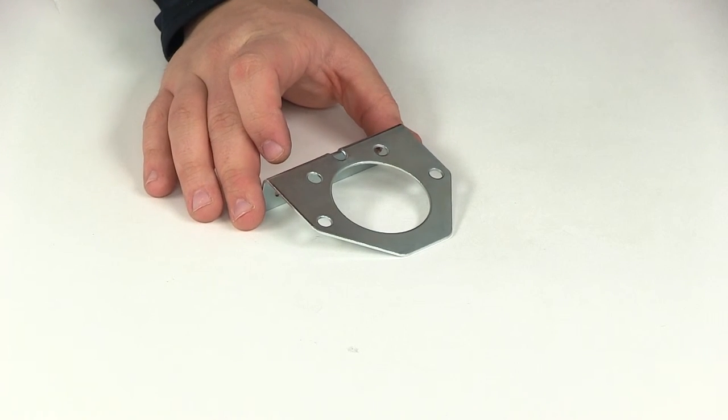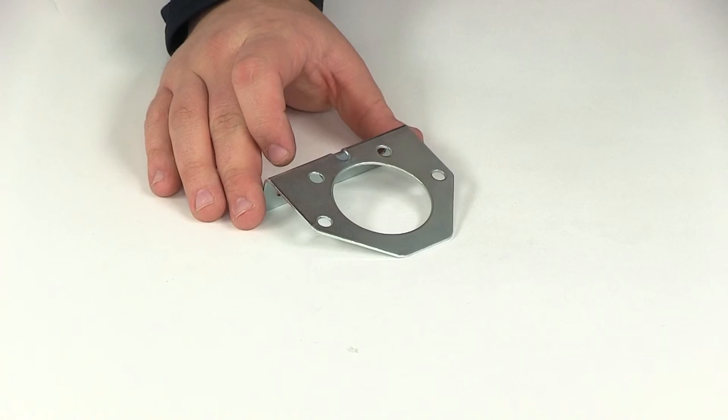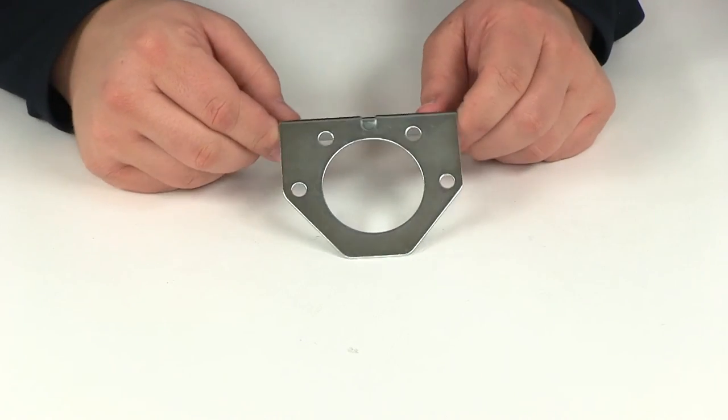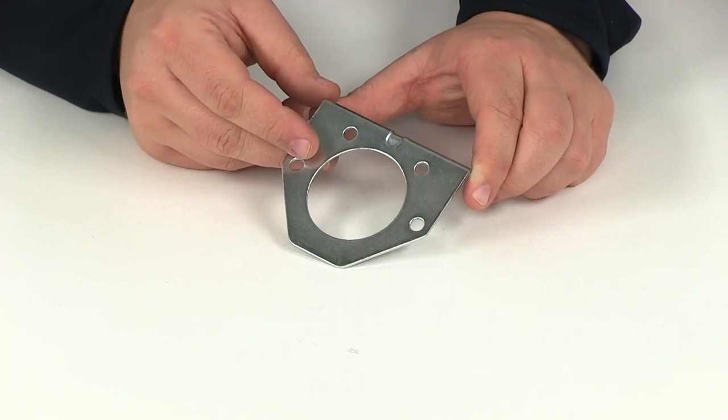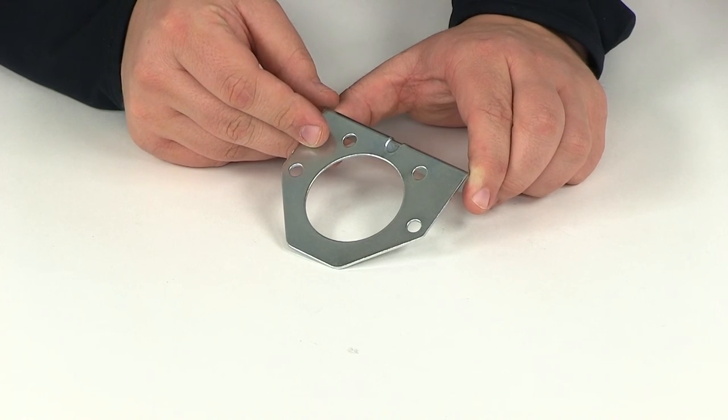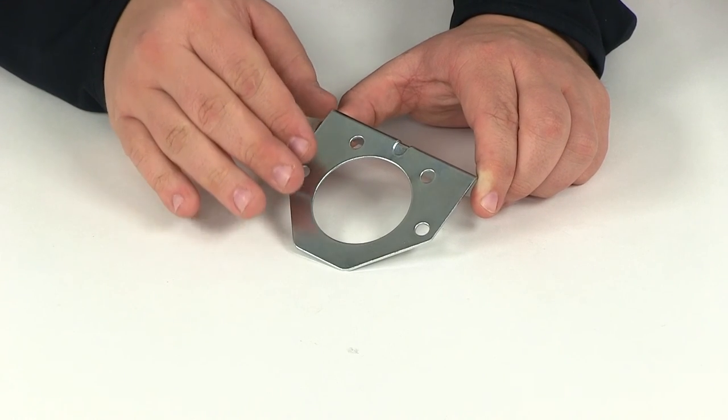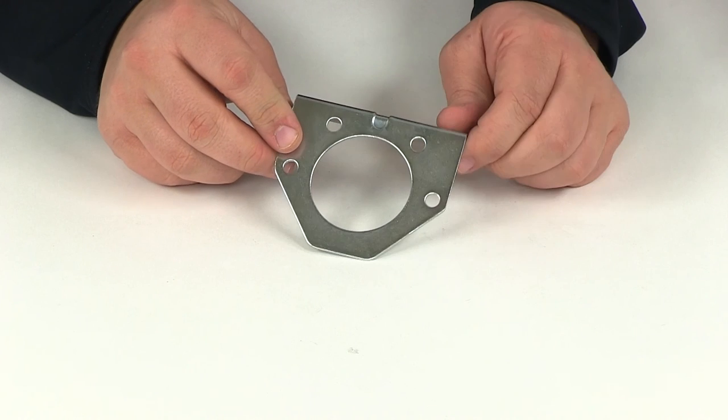That's going to do it for our review of part number PK11771. This is the Pollock bracket for the single pole trailer wiring socket, part number PK11851, but it also works with a variety of other Pollock sockets as well.